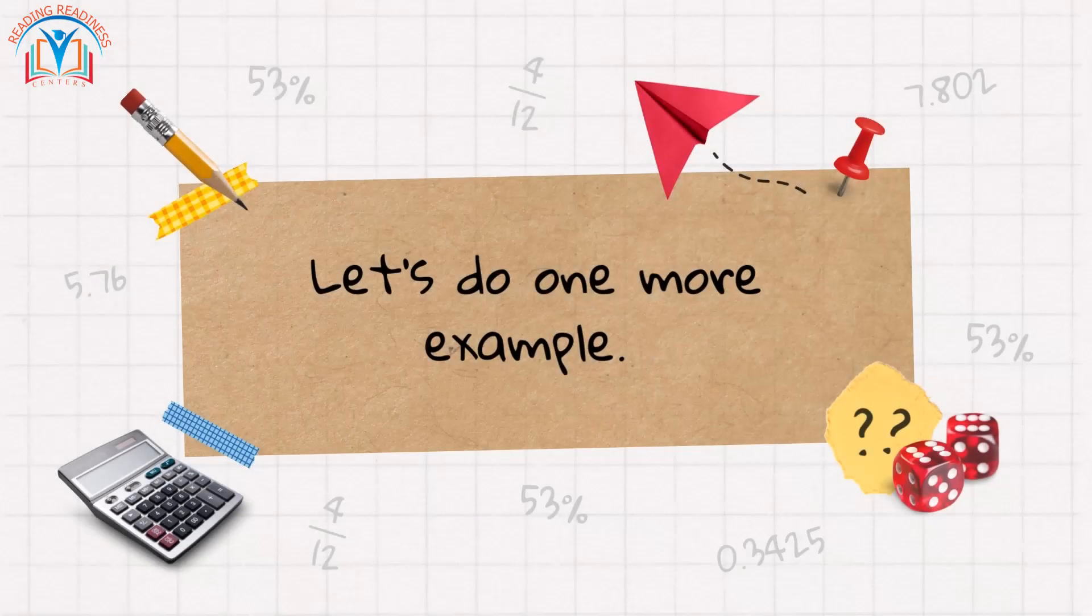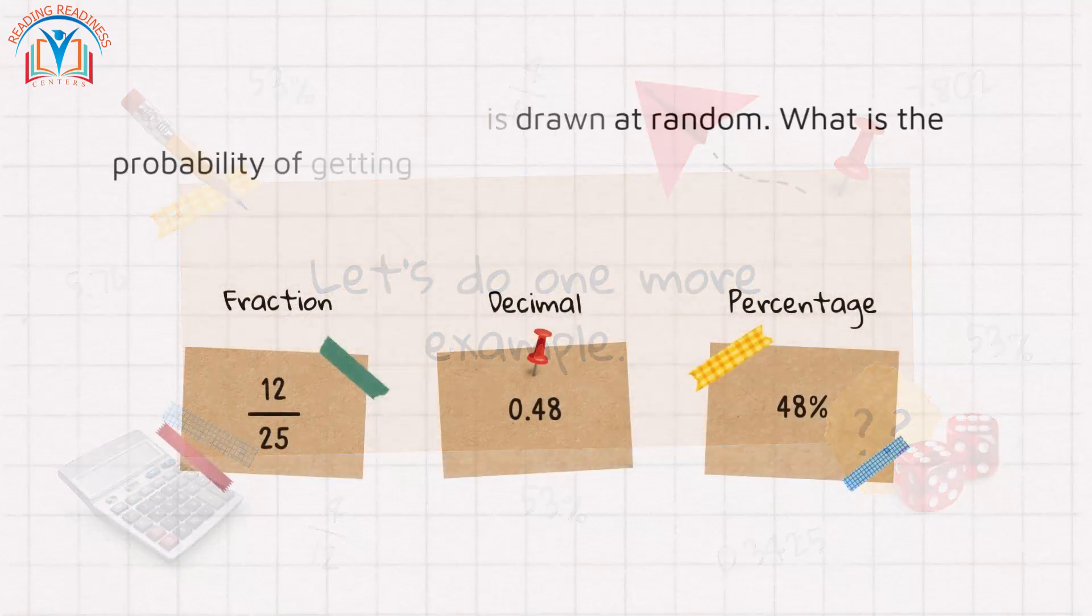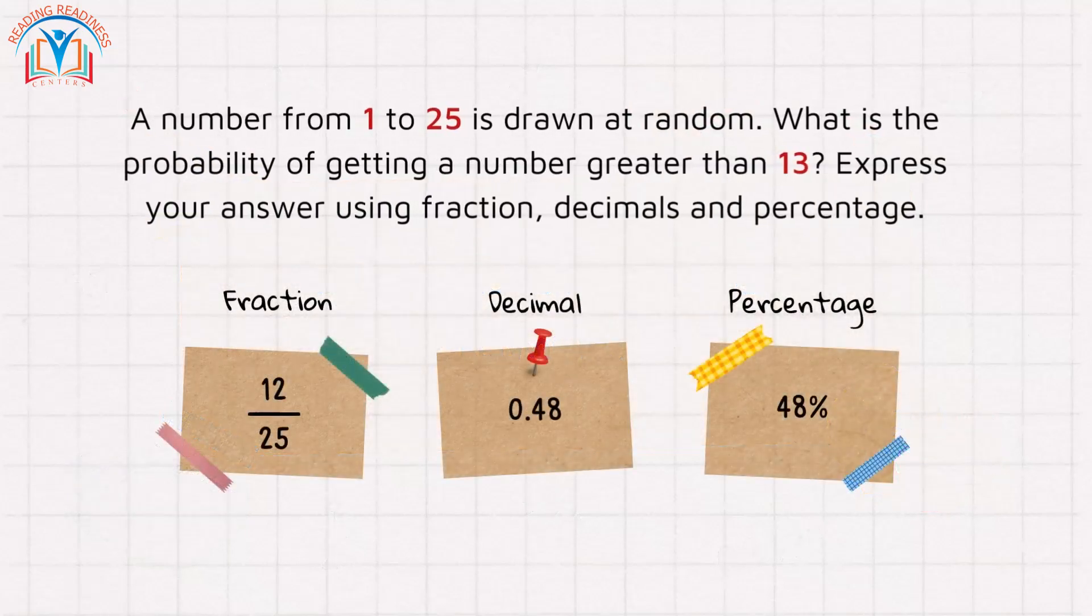Let's do one more example. What happens when a number is drawn at random from 1 to 25? What is the probability of getting a number greater than 13? There are 12 numbers greater than 13 out of 25 total numbers, so the probability as a fraction is 12/25.